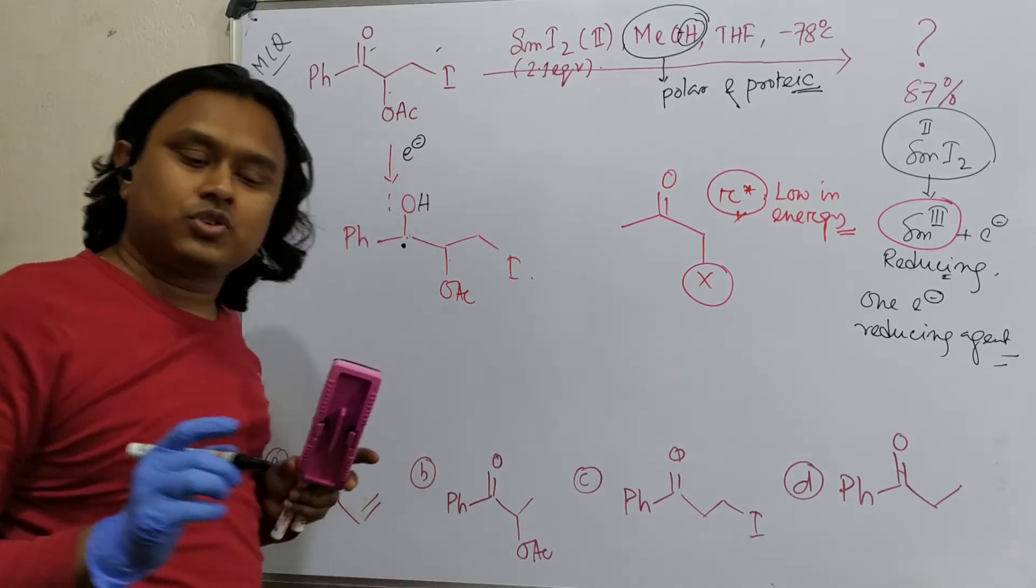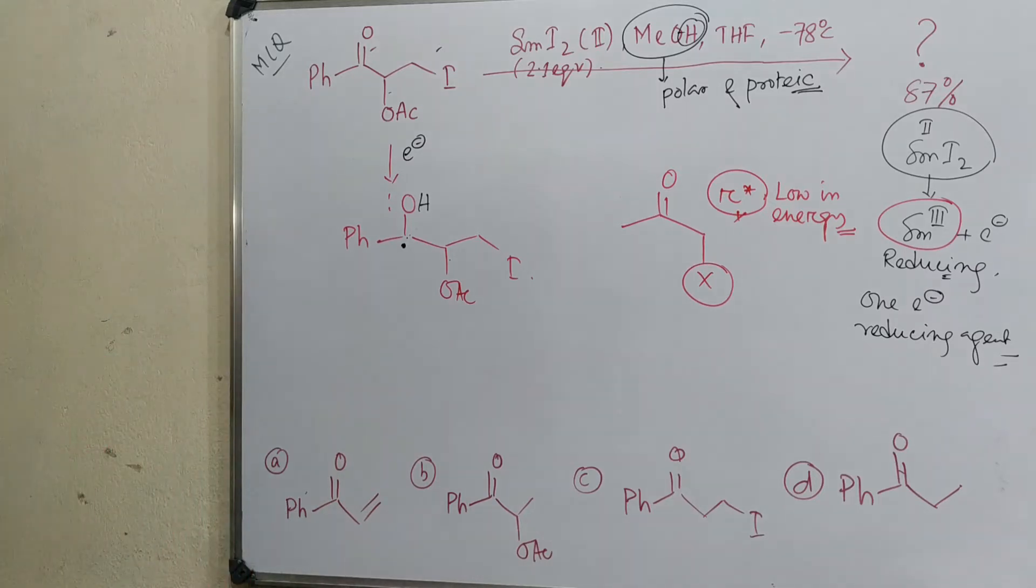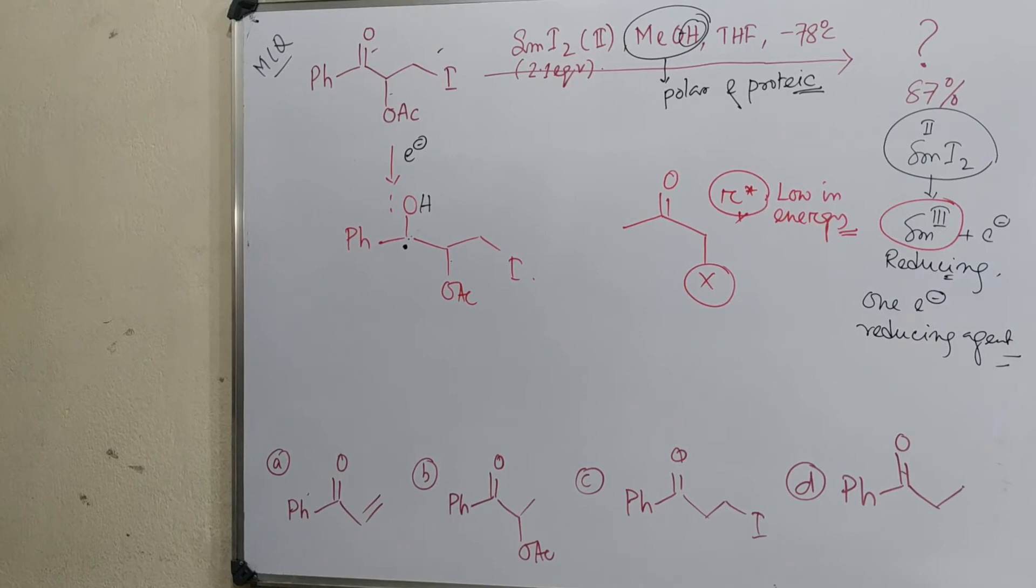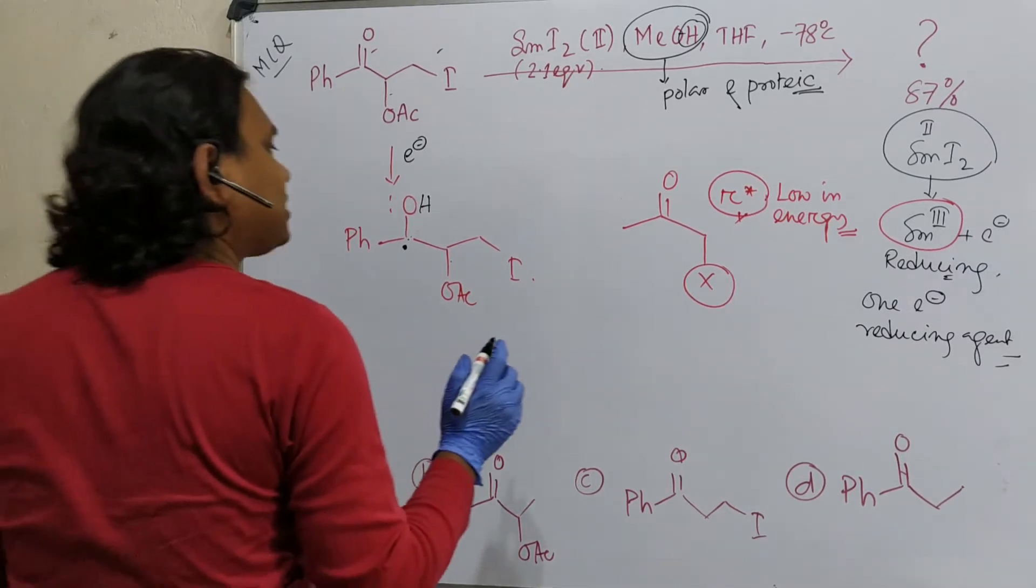Now this radical, see, radical is a seven electron species, electron deficient. And by the way, we have already discussed previously about carbocation and carbon anion, radical and carbene.